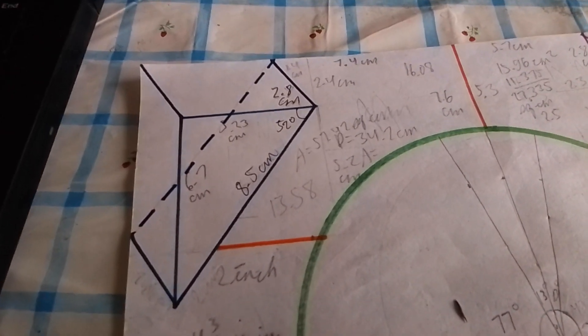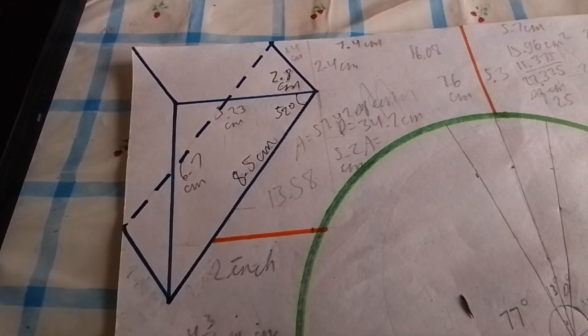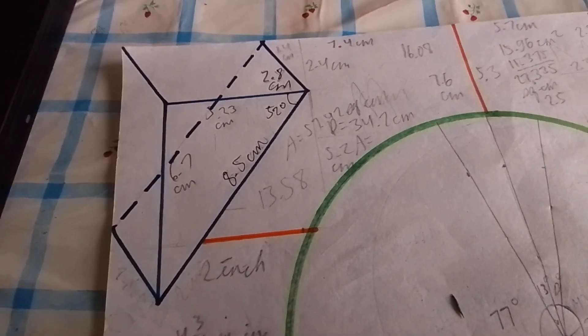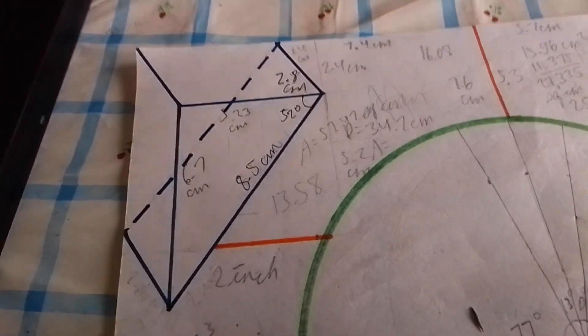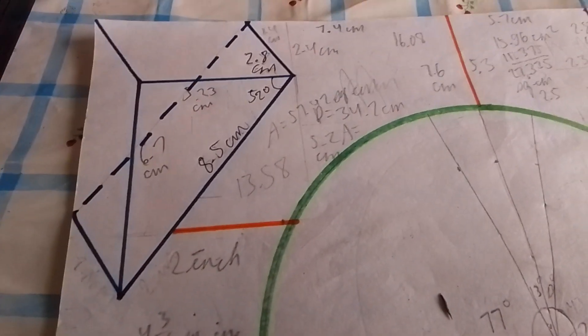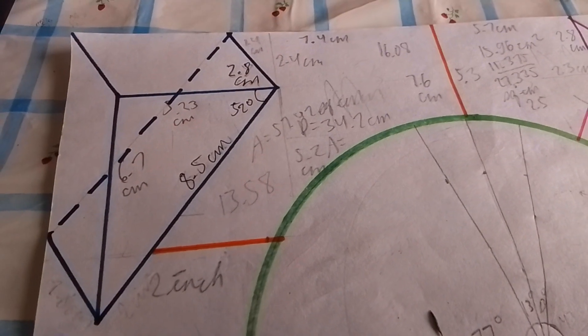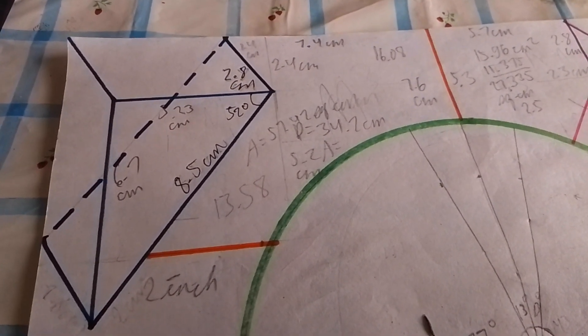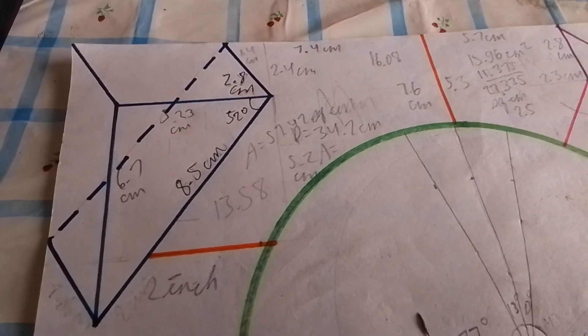So now this is how we're gonna solve for the surface area of the figure. First, let's start with the triangle. Remember, in a triangular prism, how many faces can you see? So you expect that there should be five faces in the triangular prism.